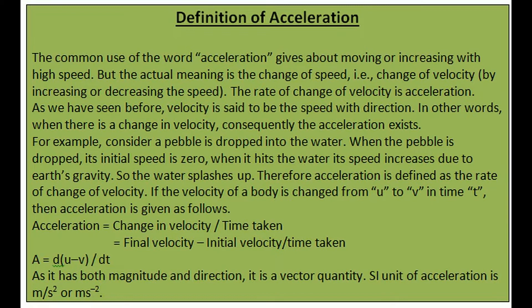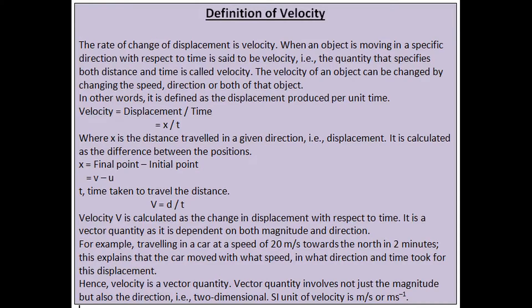Acceleration equals change in velocity divided by time taken, which equals final velocity minus initial velocity divided by time taken: a = dv/dt. As it has both magnitude and direction, it is a vector quantity. The SI unit of acceleration is meter per second squared, or ms⁻².